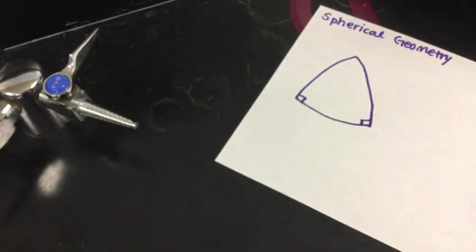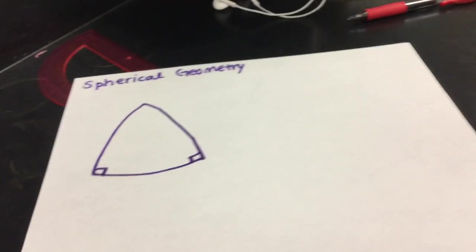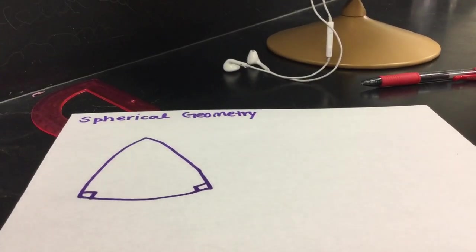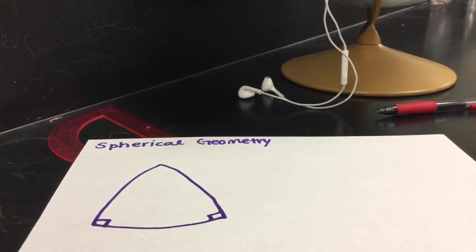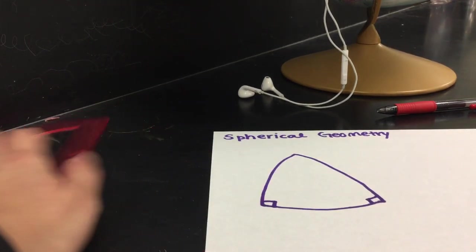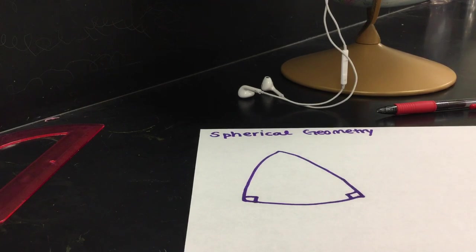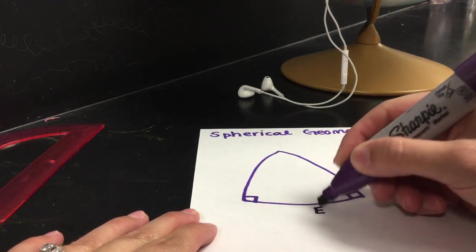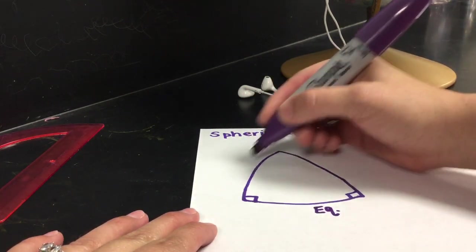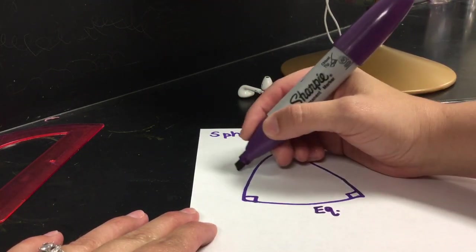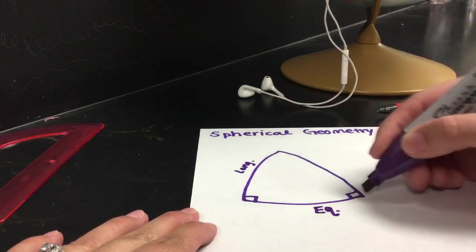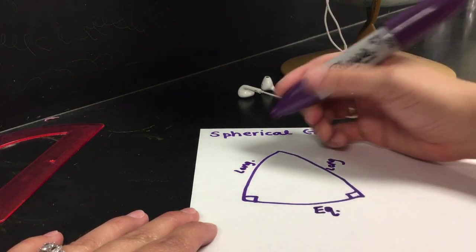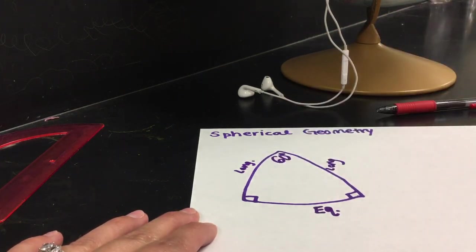What I have here is just another little paper that is looking at the spherical geometry that we just looked at on the globe. We saw whenever we connected those lines, if this was my equator, and this was one of the longitude lines, and then this was the other longitude line, this was 90 degrees, 90 degrees, and then up here we calculated that to be 60 degrees.